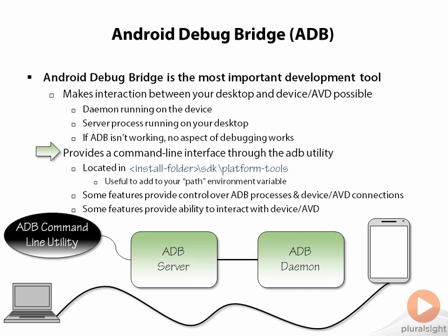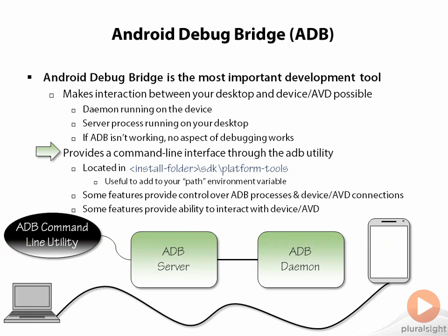The ADB command line utility serves a wide range of features — essentially everything related to ADB. Some features exist to actually manage the ADB server, connections, devices, and emulators — just managing the ADB connections themselves. Other ADB features exist to send commands and operations out to the devices and virtual devices. It's important to recognize that it covers this whole broad set of capabilities.